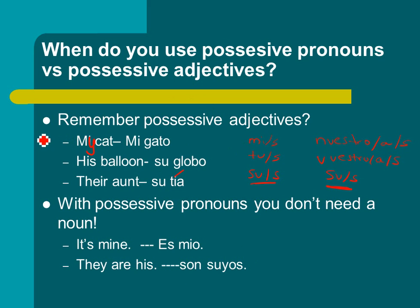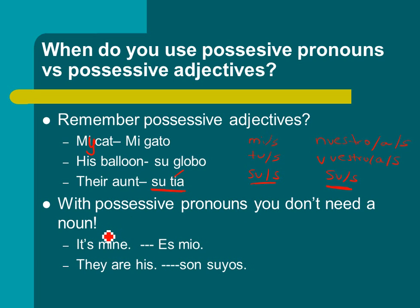The hard part about possessives: it doesn't matter how many people possess the object, it matters how many objects there are. So even though there's more of us that have the same aunt, it's still singular because it's one aunt. With possessive pronouns, if somebody spots a pen on the ground and says 'is this yours?' — you don't have to say 'is this your pen?' You can shorten it to 'es tuyo.'